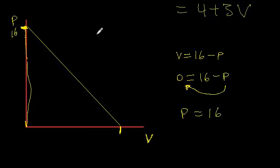And then we can do the same here. When we want to find the x-intercept, all we need to do is find out what the value is for V when P equals zero. Given this equation, V equals sixteen minus P, and we want to set P equal to zero, well, V just equals sixteen.